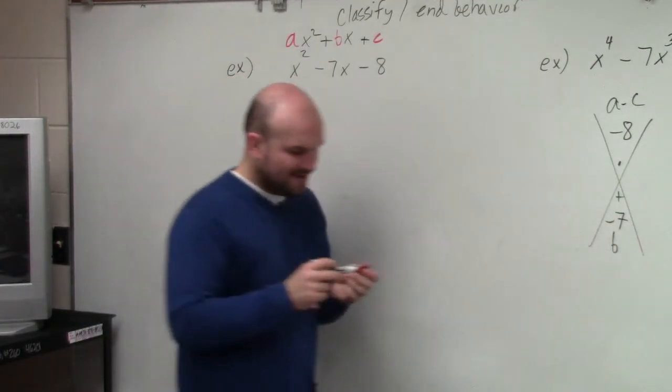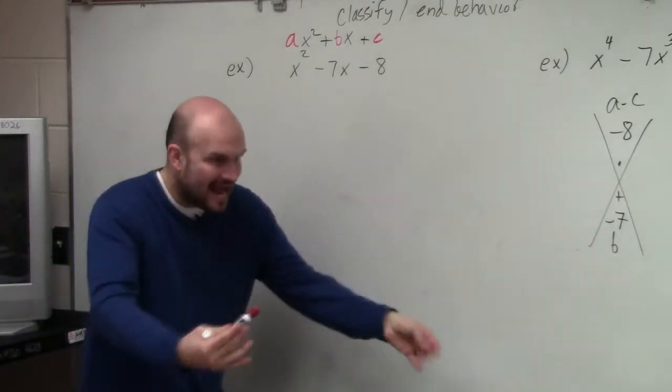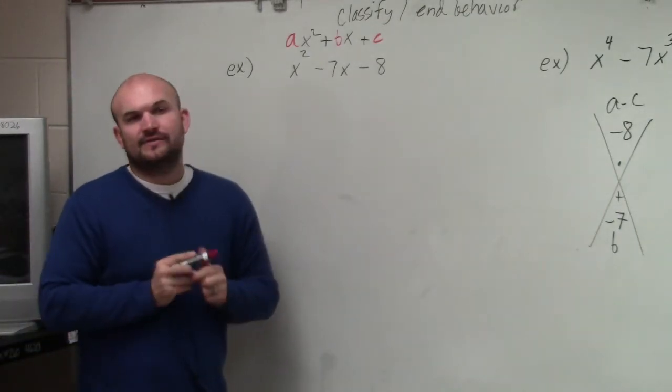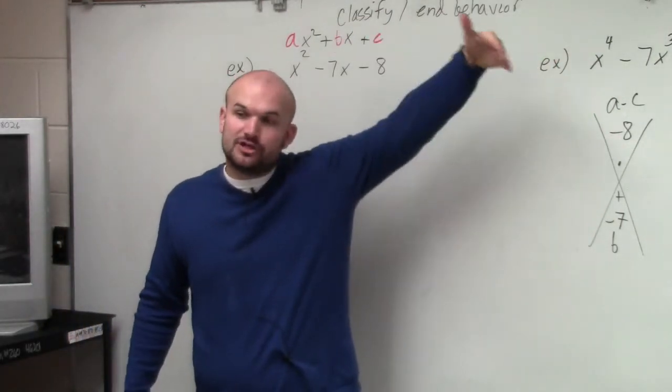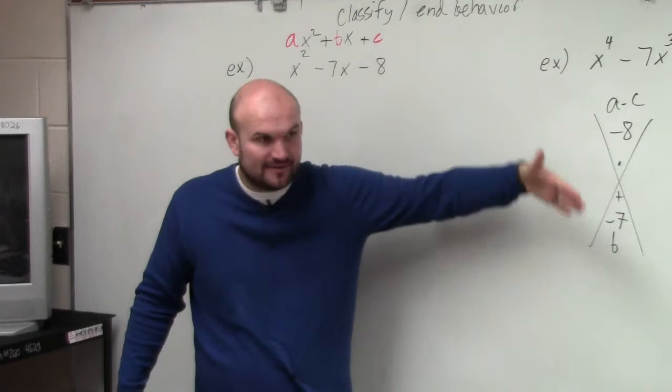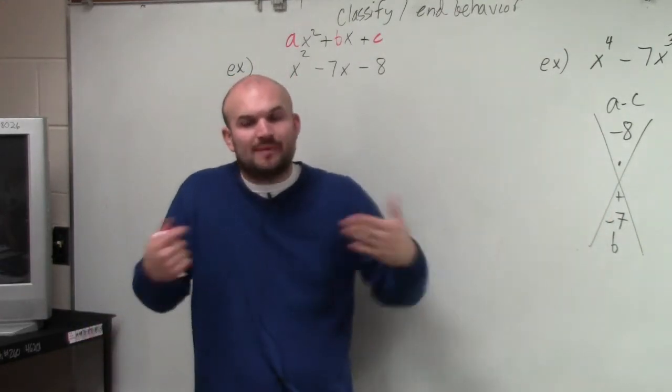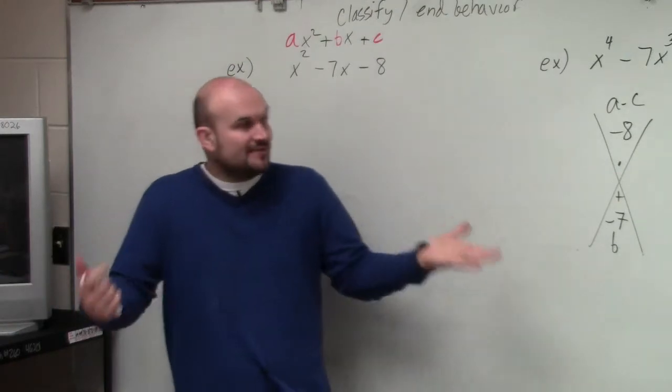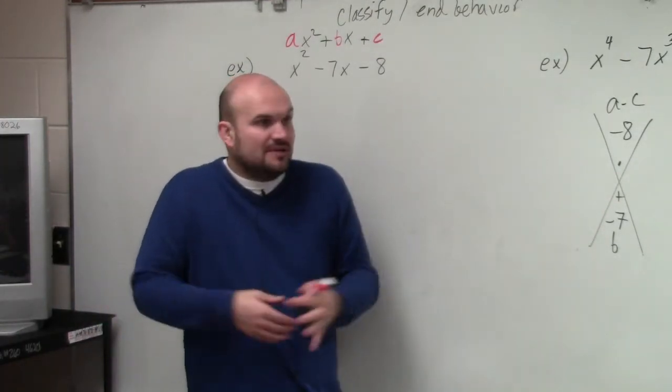So what you're trying to identify is what two terms multiply to give you negative 8 and add to give you negative 7. And I can give you a helpful hint. When you are multiplying to give you a negative number, one of your factors has to be negative. You can't have two positive multiply to give you a negative, or two negative multiply to give you a negative.